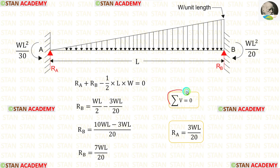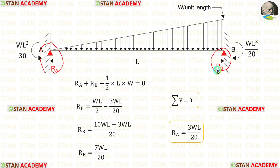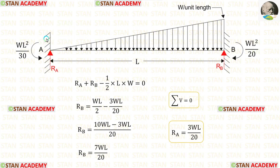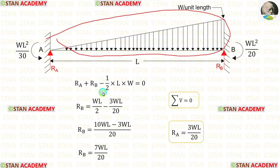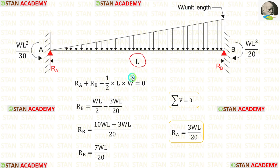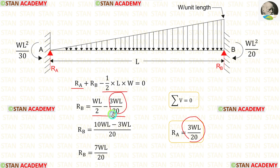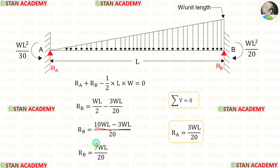Using the equilibrium equation ΣV = 0, RA and RB are both acting upwards (positive) and the triangular load acts downwards (negative). The total triangular load is the area = ½ · L · W. Substituting RA = 3WL/20 and taking LCM as 20, we get 10WL − 3WL = 7WL. Therefore RB = 7WL upon 20.